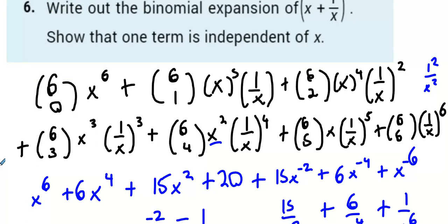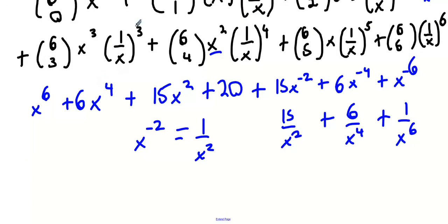Now, it wants to show that one term is independent of x. Well, there it is right there. That plus 20 has no x value in it. So that was the term that had no x in it.